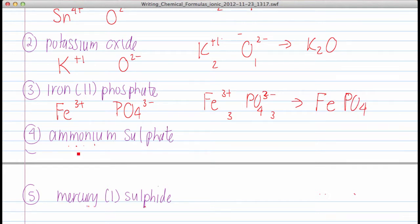Next one would be ammonium sulfate. So I put a 2 there and a 1 there. Now because I have 2 of a polyatomic ion, I'm actually going to put them in brackets. N H 4 2 plus S O 4.